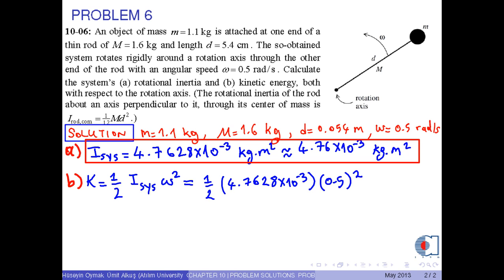Now, we put the numerical values into this equation, and we obtain the kinetic energy of the system with respect to the rotation axis as 5.95 times 10 to the power minus 4 joules.